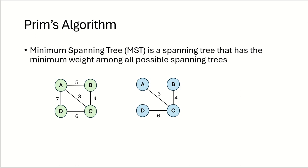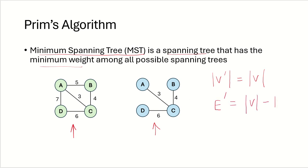In an earlier video we have seen what minimum spanning trees are. A minimum spanning tree is a spanning tree that has the minimum weight among all possible spanning trees. We also know that in the MST, the number of vertices equals the number of vertices in the graph, the number of edges equals the number of vertices minus one, and there cannot be any cycle in the MST.